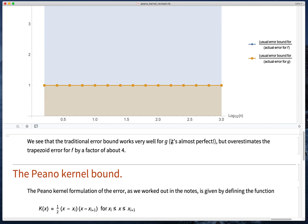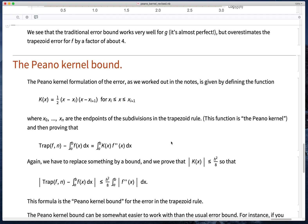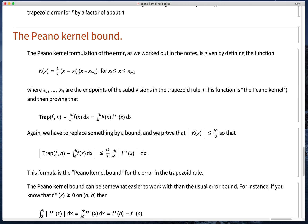This brings us to the Peano kernel. Okay, so what the Peano kernel proof tells us is that the actual error, the difference between the trapezoid rule with n subdivisions and the actual integral, is equal to a weighted average of the second derivative. And what are the weights? Well, the weights are given by this function, which is piecewise quadratic.